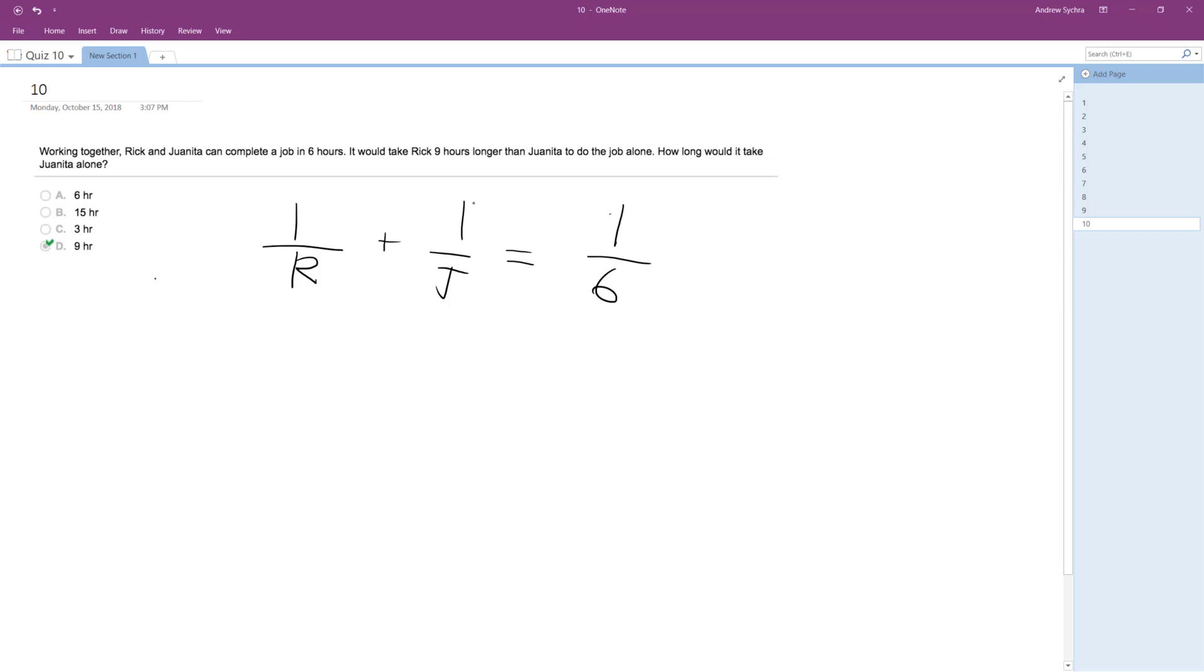But because it would take Rick nine hours longer, we'll make Juanita equal to X. So Rick is equal to X plus nine, and Juanita is just one over X, and then both together is one over six.